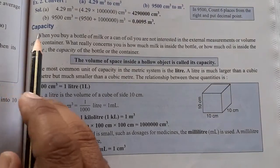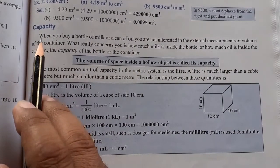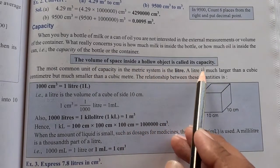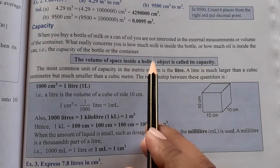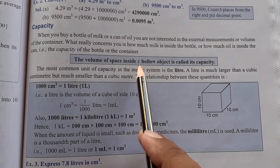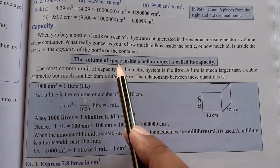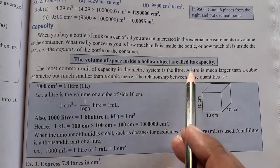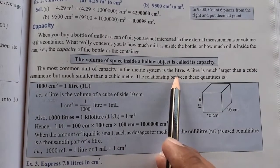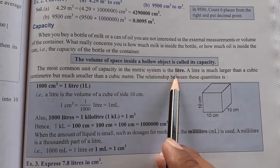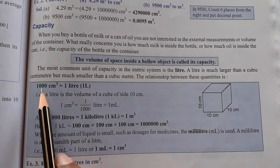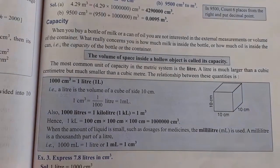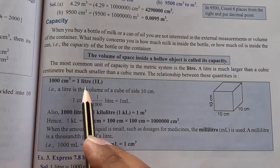This is another topic: capacity. What is capacity? The volume of space inside a hollow object is called its capacity. It is written as a liter. Liter is a unit of capacity. One liter means 1,000 centimeter cube.